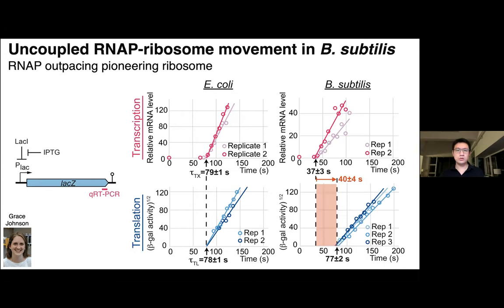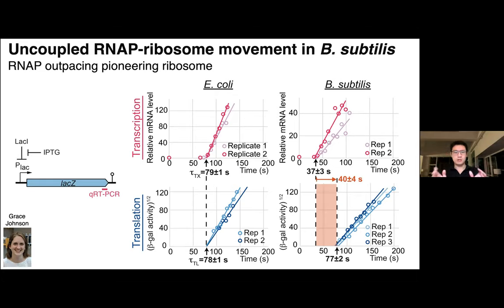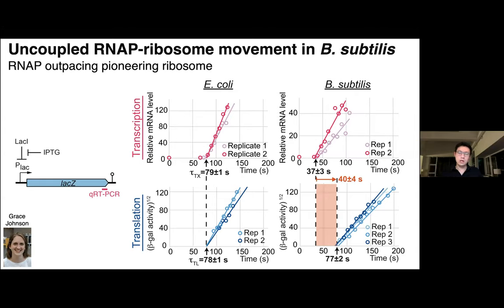In E. coli, Grace confirmed many years of prior work showing that by the time the first full-length RNA is made, the first protein is made at the same time. But this is not true for Bacillus subtilis — transcription accumulates much earlier than the time it takes to make the full-length protein. This delay turns out to be around 40 seconds, and this is using the same gene, so it's not a difference in genome composition but purely from differences in their motors. We also showed that this delay between transcription and translation occurs for endogenous genes in Bacillus subtilis.